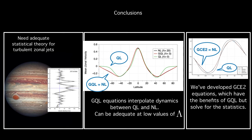So to conclude, we were looking for a theory of turbulence zonal jets. We developed an adequate dynamic model called GQL, which interpolates between QL and NL. And in fact, it can be adequate at very low values of the cutoff zonal wave number lambda. And in this talk, we derived the statistical equations corresponding to GQL. We call these GCE2 equations. They have the same benefits of GQL, in the sense that they can be adequate at low values of lambda, but they solve for statistics. And so they benefit from the computational gains made by solving directly for statistical quantities.